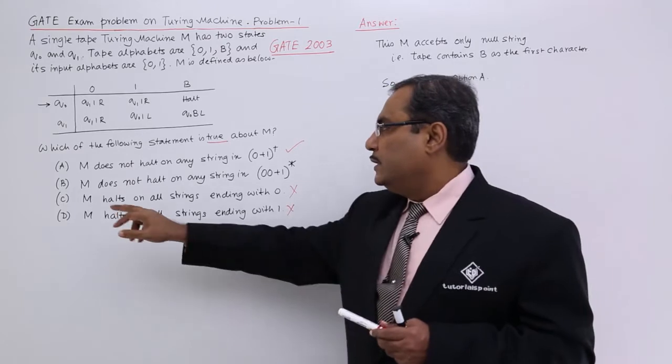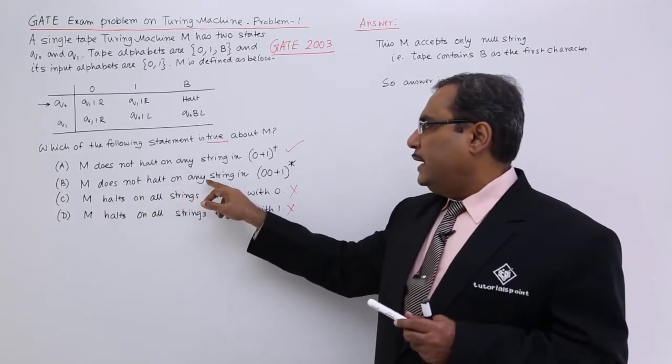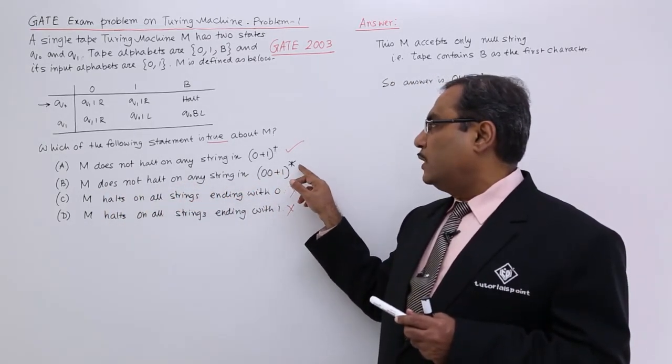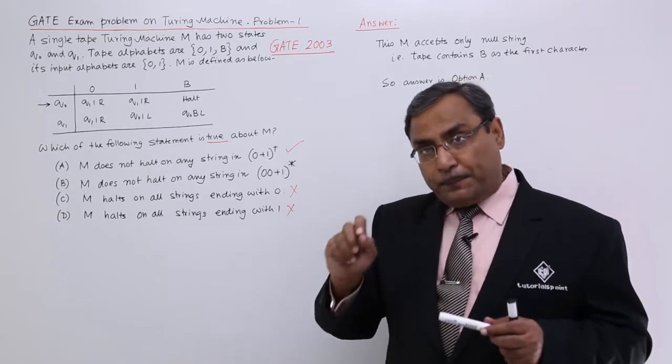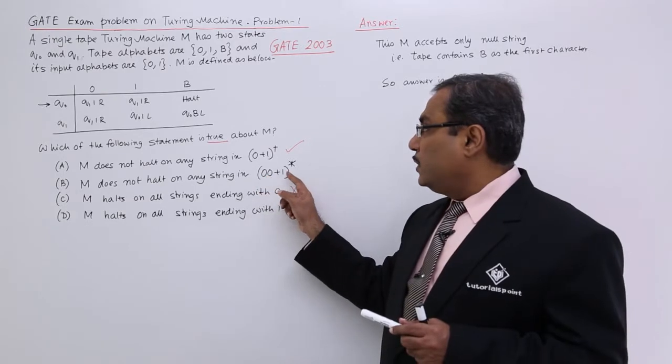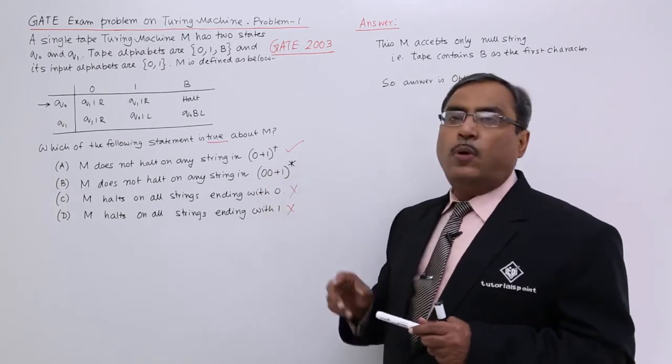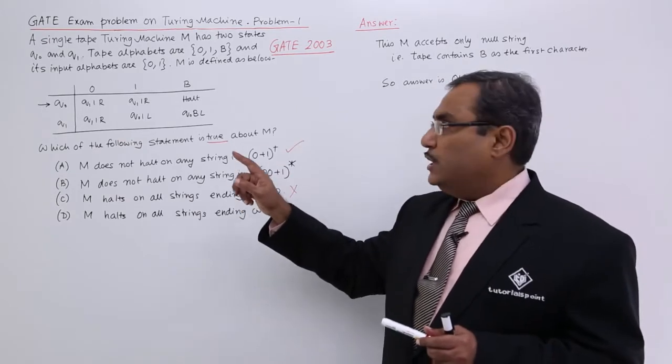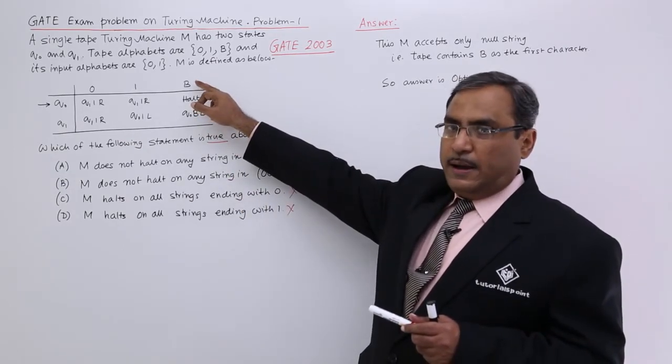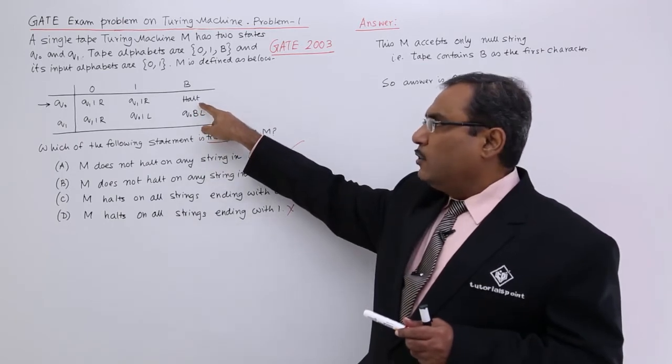But here you see M does not hold on any string in 0 plus 1 whole star. Whole star means what? Whole star means it is having kappa and then all possible combinations of 0 and 1. But obviously, at initial state Q0 if we apply kappa or blank, if we apply blank then it will hold.